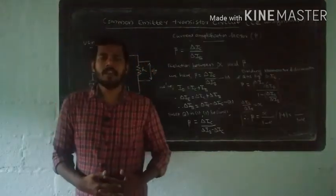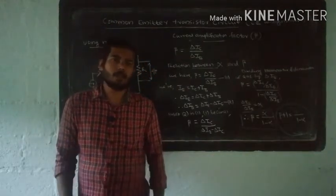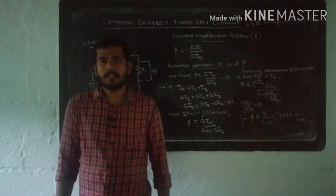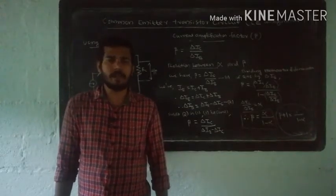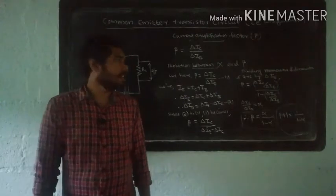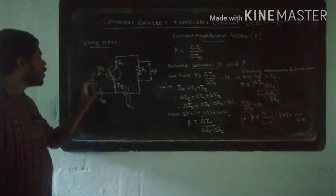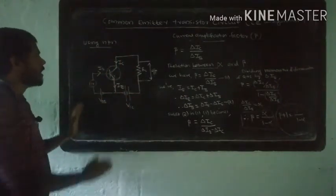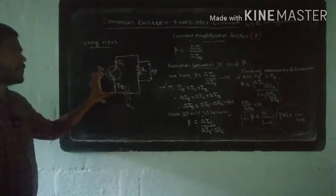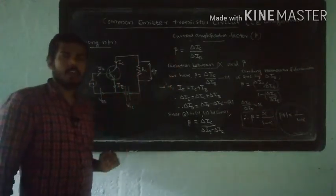This is the Common Emitter Transistor Circuit. We have the NPN transistor Common Emitter configuration circuit and the PNP transistor Common Emitter configuration.